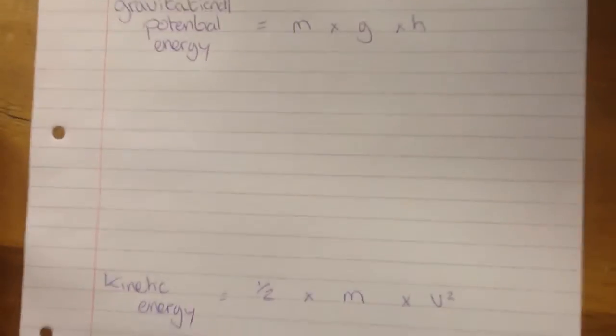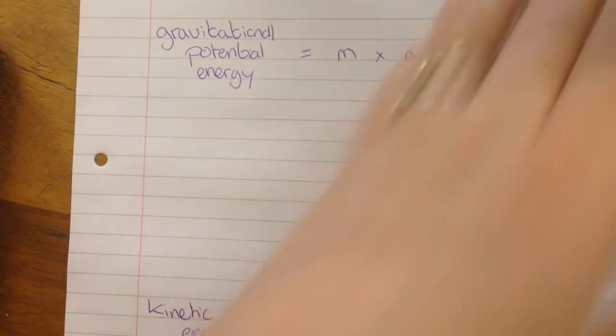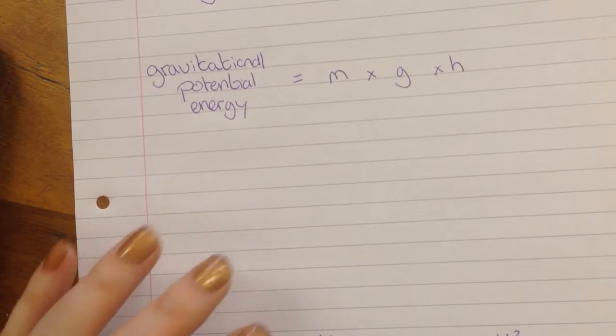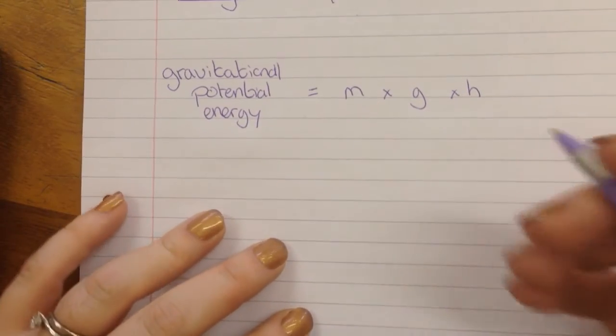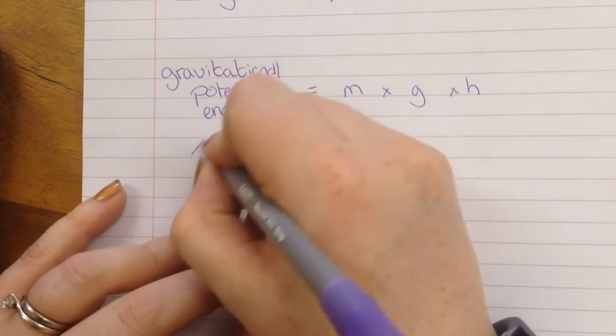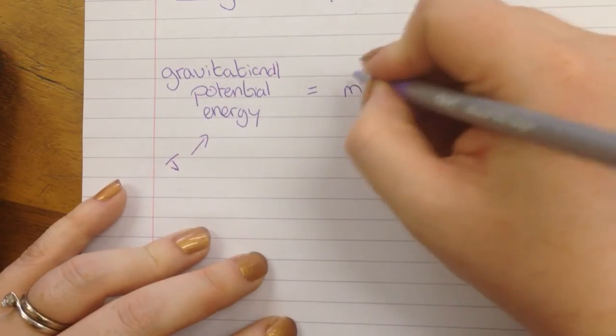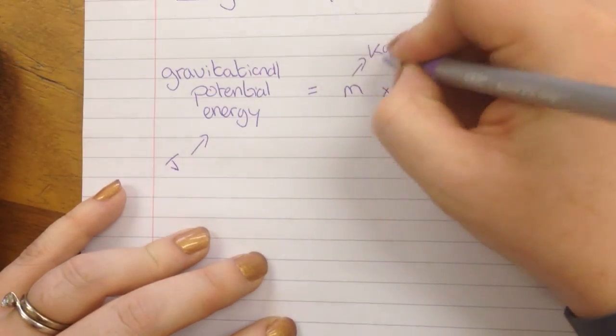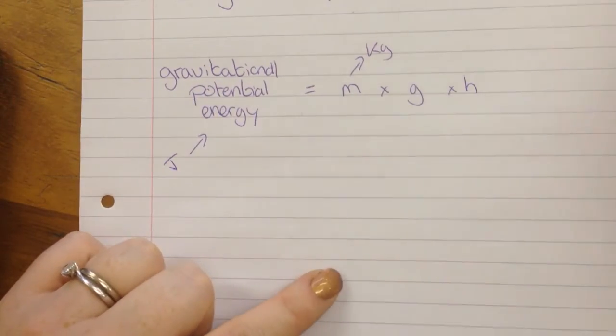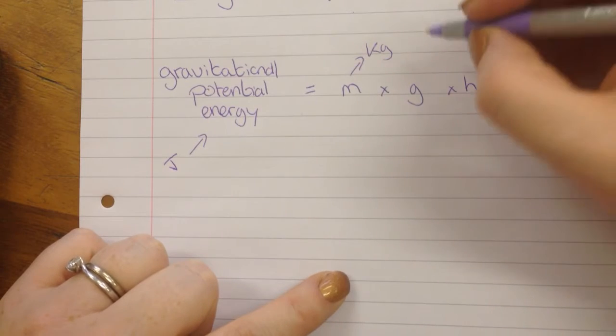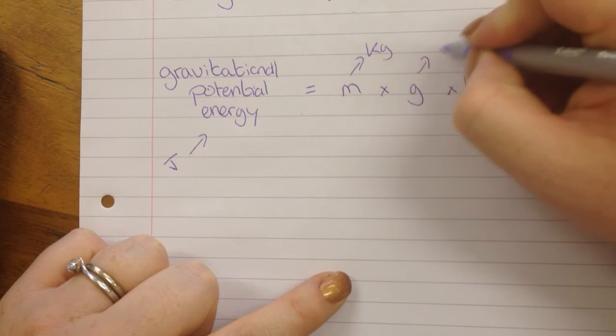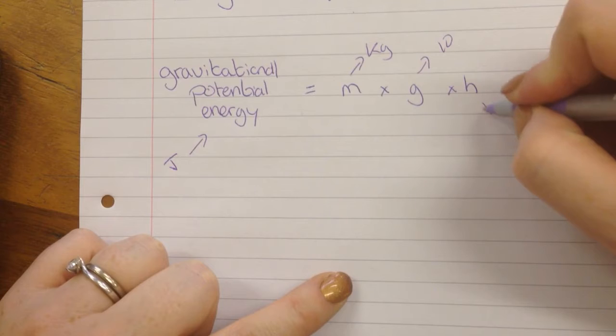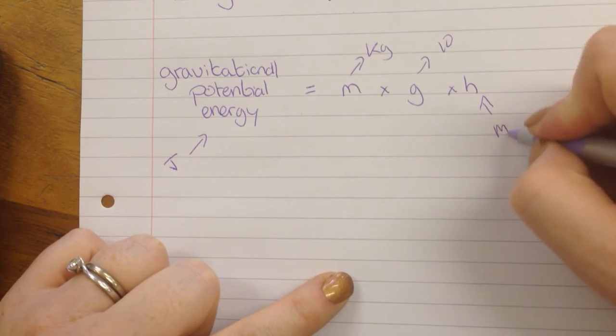So we need to do a little bit of maths for this. First we're going to work out the gravitational potential energy. So this is our equation for gravitational potential energy. Energy is in joules. Mass is in kilograms. G is the gravitational field and you need to remember that is 10. And height is in metres.